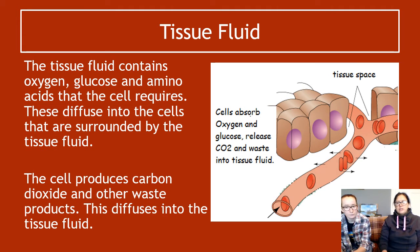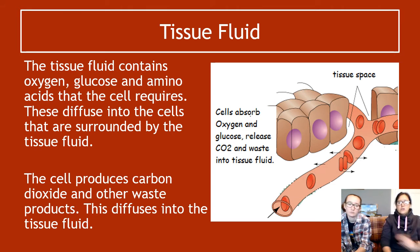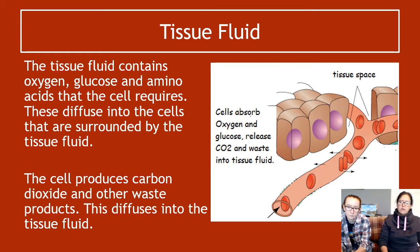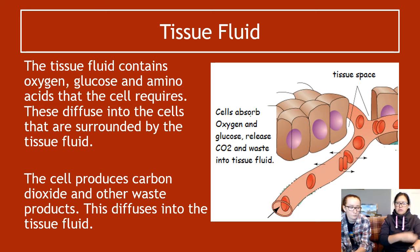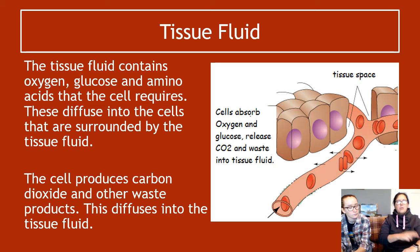The tissue fluid doesn't contain everything the plasma did — some substances get left behind because they can't get out of the capillary. Tissue fluid contains oxygen, glucose, and amino acids that the cell needs. Because these are at a higher concentration in the tissue fluid than in the cells, they diffuse into the cells bathed in this fluid. If you've ever scraped your skin and the injury was wet but not bleeding, that wet layer is tissue fluid — cells are surrounded by this fluid.